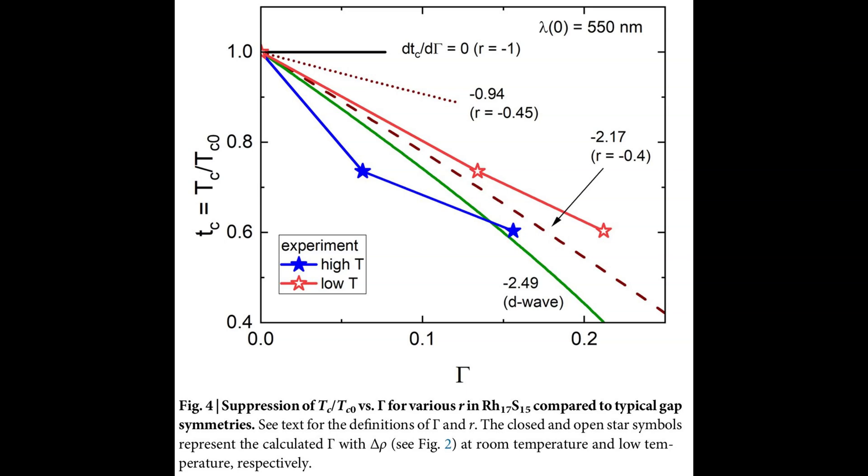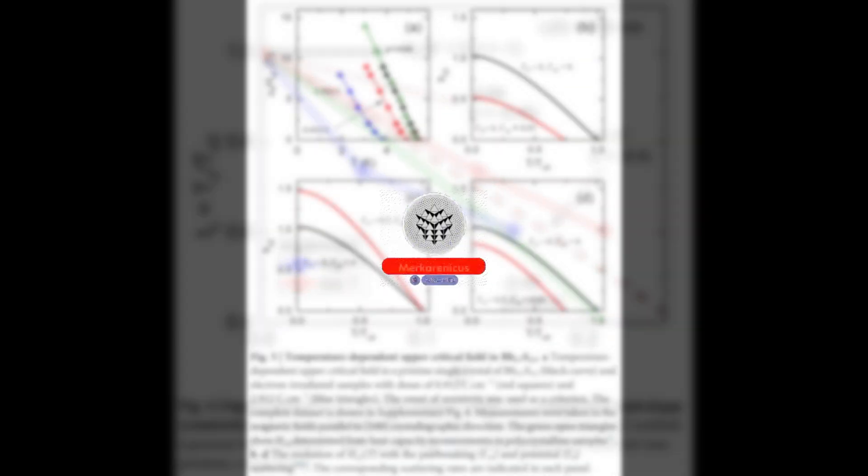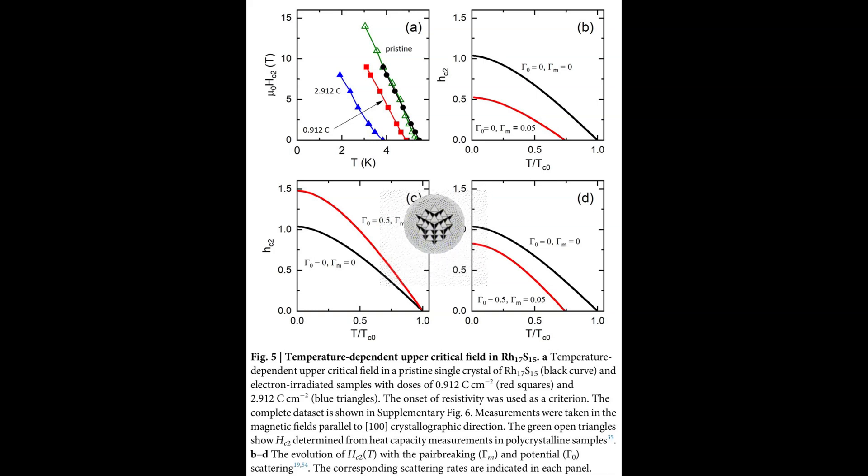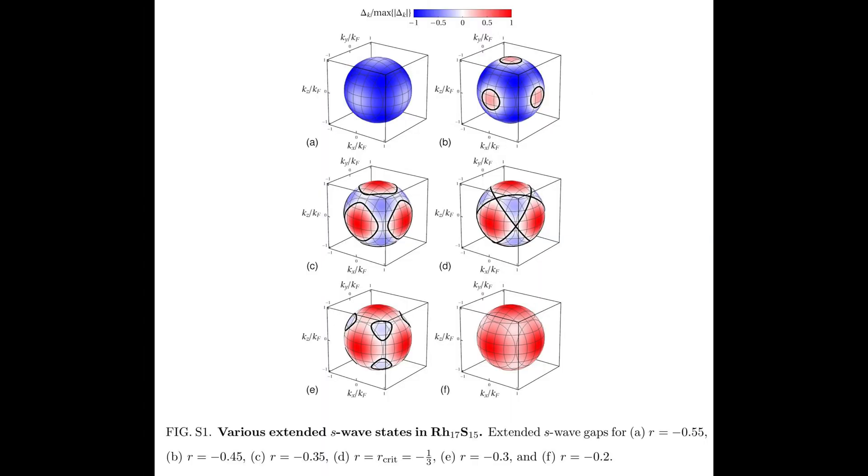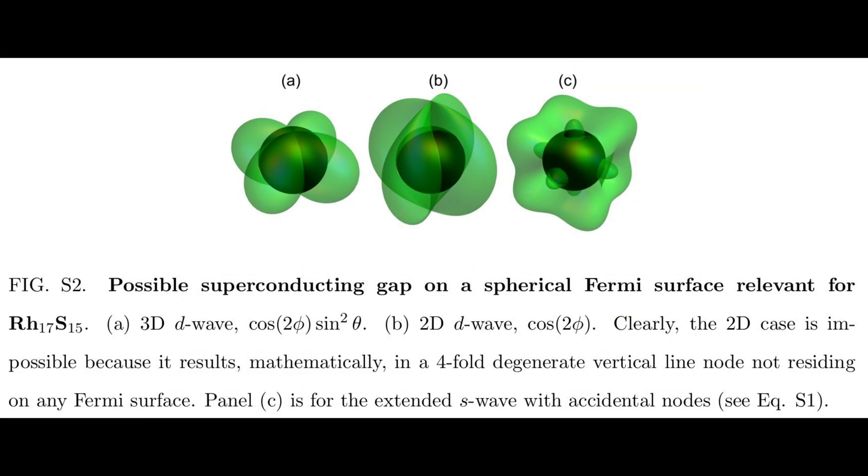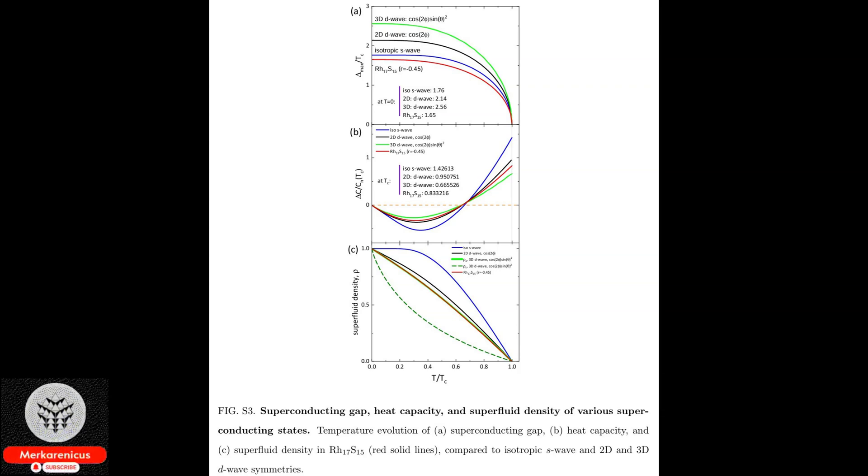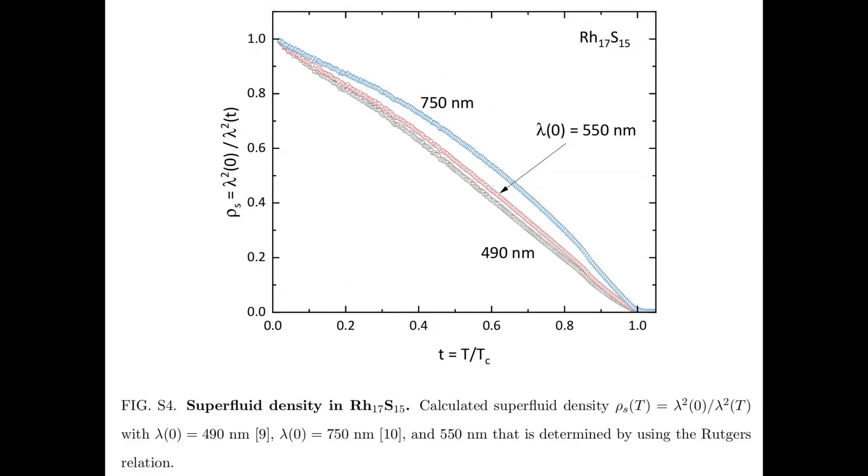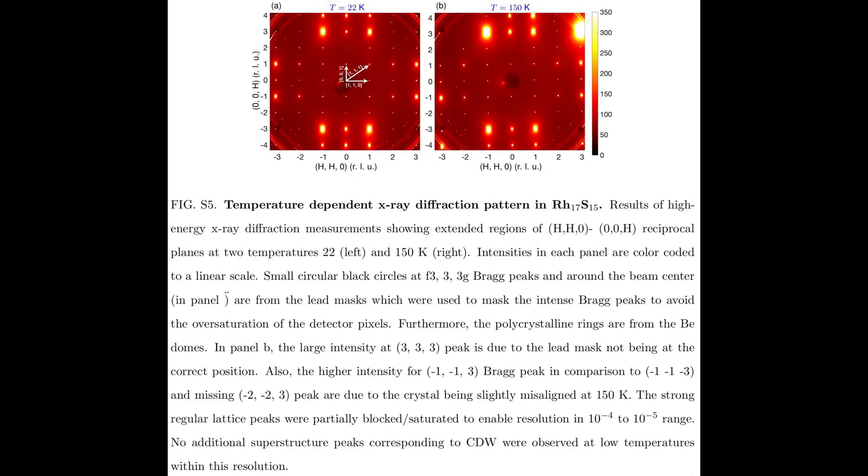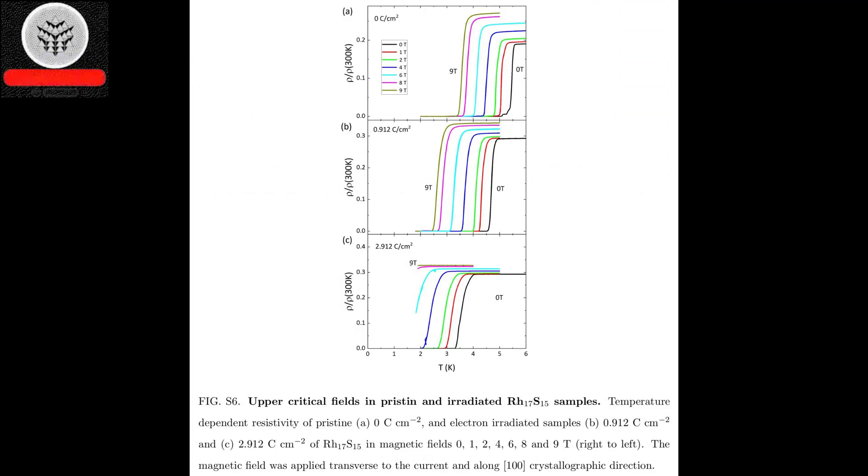Upon closer examination, the team uncovered that miocite displays characteristics akin to those observed in high temperature superconductors. To validate its superconducting behavior, magnetic field penetration and defect introduction tests were conducted, yielding affirmative results. These significant findings contribute to the scientific community's understanding of this particular form of superconductivity, potentially paving the way for more sustainable and cost-effective advancements in superconductor-based technologies in the future.